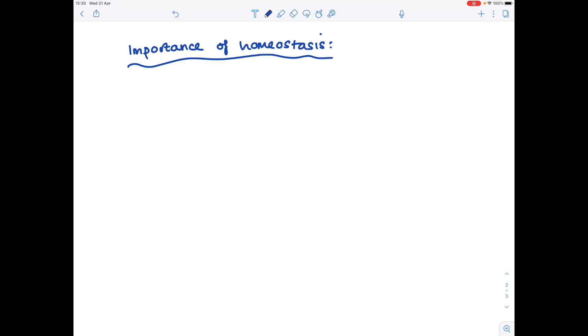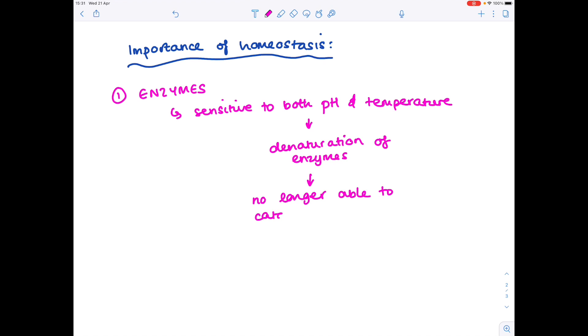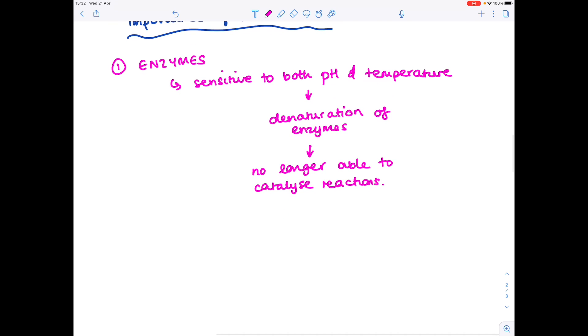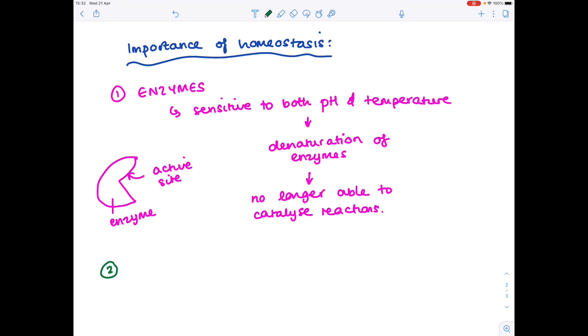Now we need to consider the importance of homeostasis. So why is it so important? Let's first of all consider enzymes, which remember are very sensitive to both pH and temperature. And we know that if we see large fluctuations, particularly in temperature, we see the denaturation of enzymes, which stops them effectively catalysing reactions that happen within our bodies. And remember that denaturation involves the enzyme's active site changing shape and configuration. So we've looked at enzymes, and in fact that includes other proteins as well.